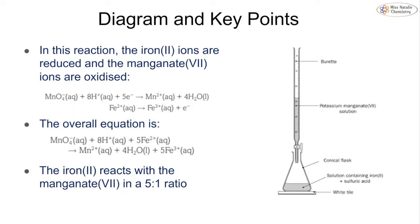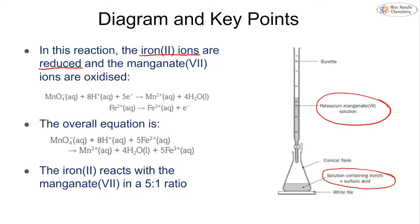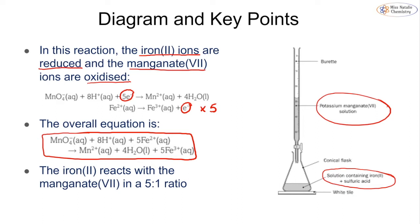The setup shows our potassium manganate solution in the burette and iron(II) with sulfuric acid in the conical flask. In this reaction, iron(II) is oxidized to iron(III) and manganate(VII) is reduced to manganese(II). Combining the half-equations, making sure electrons cancel out — five electrons on one side, one on the other — we multiply accordingly and get the overall equation. The ratio is five moles of iron to one mole of manganate, which is extremely important for calculations.